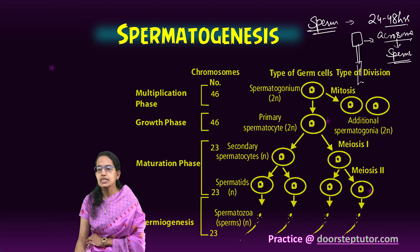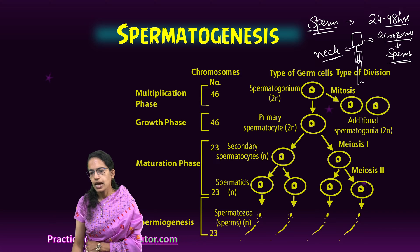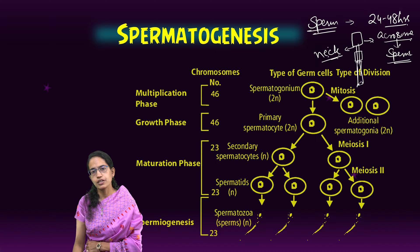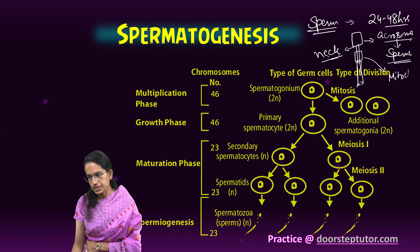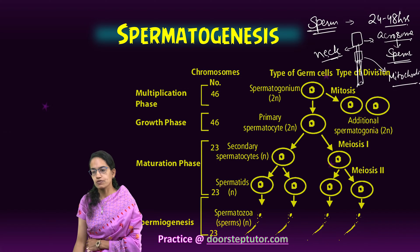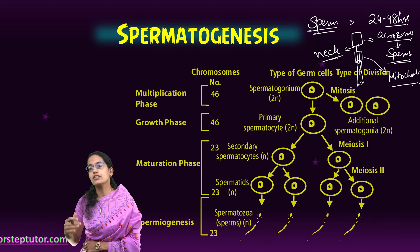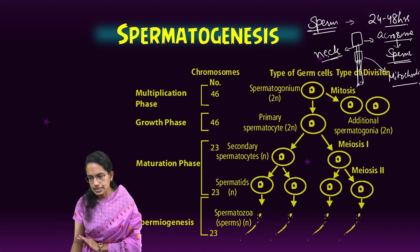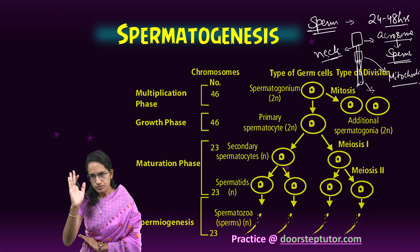The next part is the neck, which is relatively short. It connects the head to the middle piece and gives rise to the axial filament of the sperm. The middle piece is where mitochondrial spirals are present, and therefore it is called the powerhouse of the sperm. The tail is extremely longer compared to the head and is extremely important because it helps in movement.